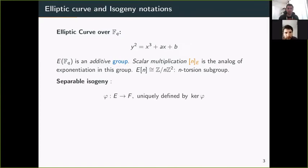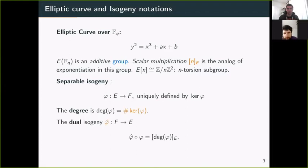An isogeny is a rational map between two elliptic curves E and F which sends the point of infinity of E to the point of infinity of F. In particular, it's also a group homomorphism. An isogeny is separable if the degree equals the cardinality of the kernel. If you have an isogeny between E and F, there's also a dual isogeny between F and E with the property that if you compose with the original isogeny, you get multiplication by the degree.